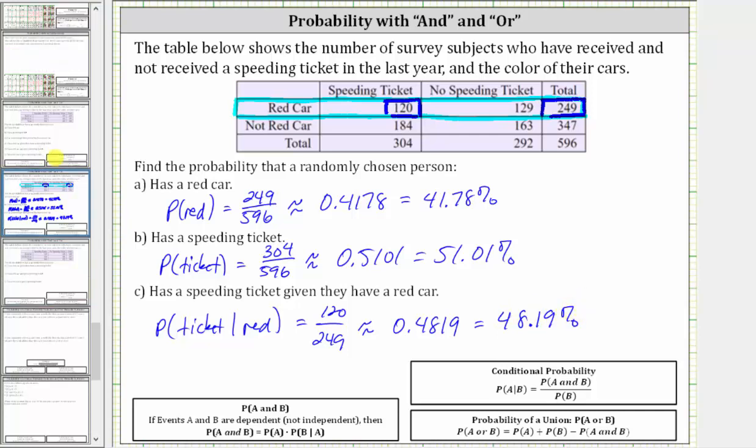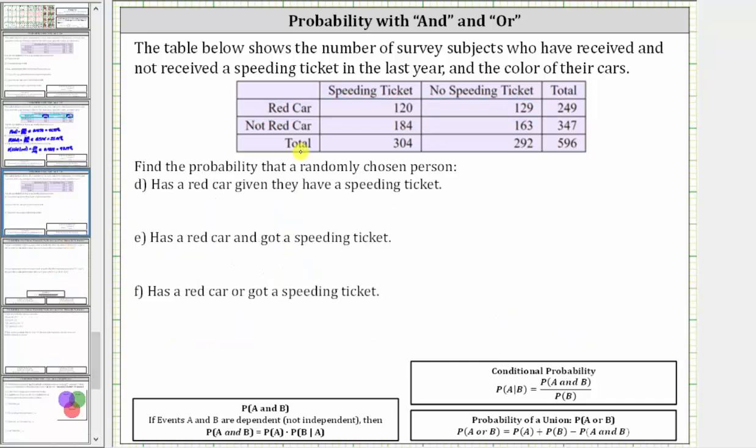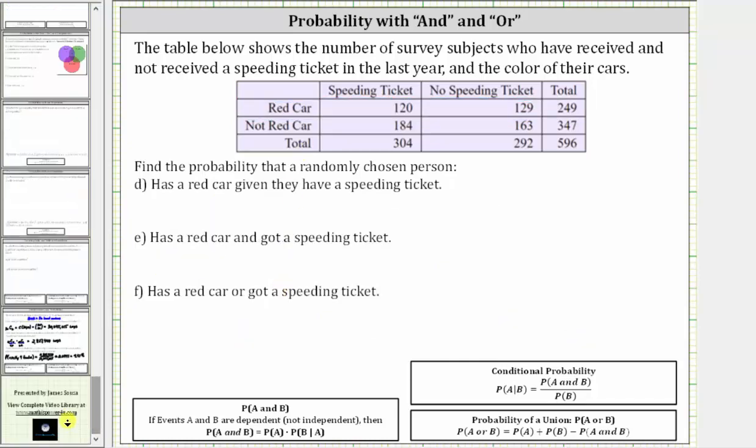I think we'll stop here and call this part one. In part two, we will determine these three additional probabilities. I hope you found this helpful.